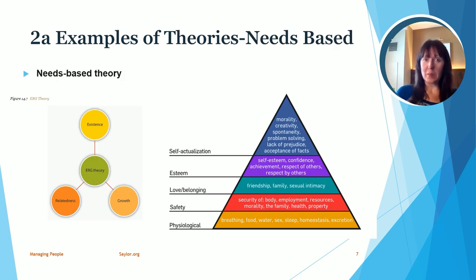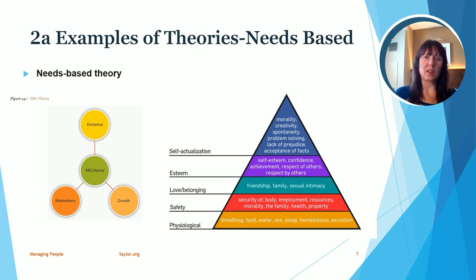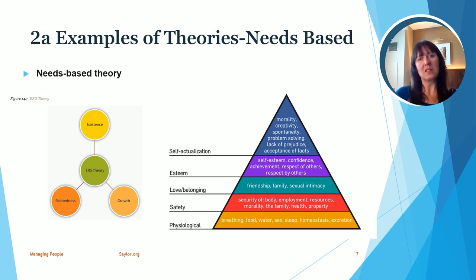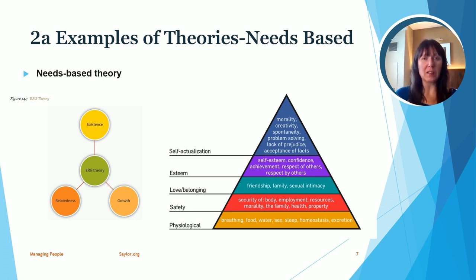Let's dig deeper into needs-based theories. We have two examples: the ERG theory and Maslow's hierarchy of needs. The ERG theory says there are three main needs: existence needs, relatedness needs, and growth needs. Existence needs are basic physiological needs like food, water, and shelter. Relatedness needs refer to the social needs we have — a sense of belonging. Growth needs refer to our need to continually develop ourselves and enhance our skills.